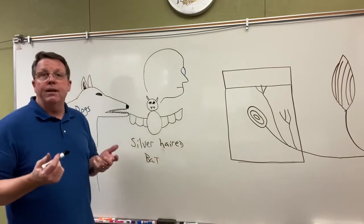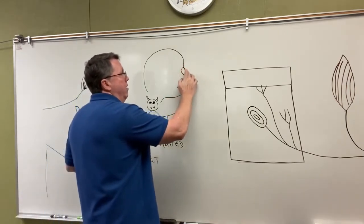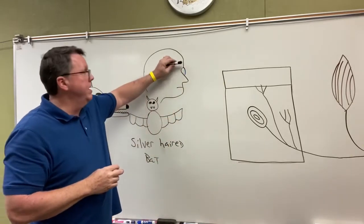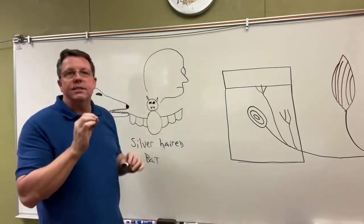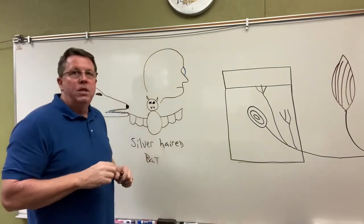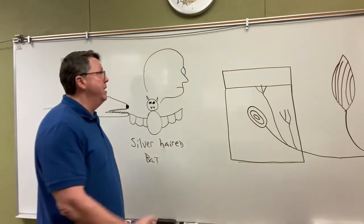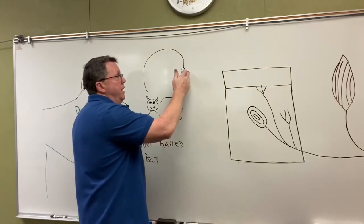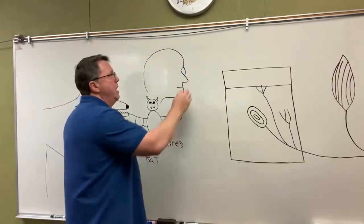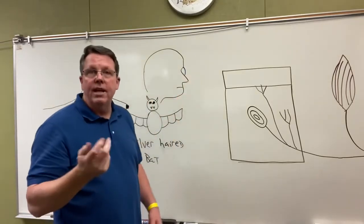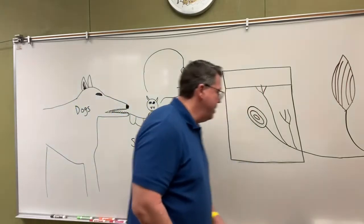Another way that people get rabies is from organ transplants, such as the cornea of the eye. The cornea is that clear part that sticks out and directs light into the pupil. There's not a very big blood supply to the cornea, so there's no way to really fight off rabies there. In some countries, somebody will have rabies, not realize it, and their cornea will be transplanted onto somebody else, giving that person rabies.